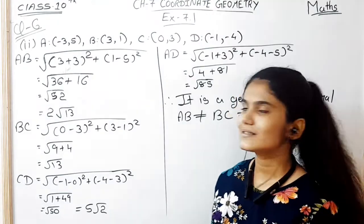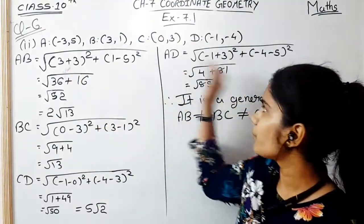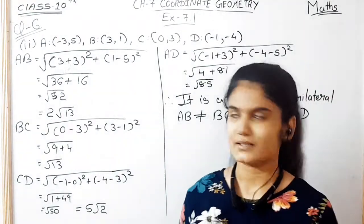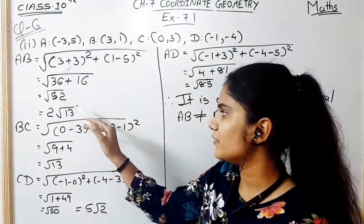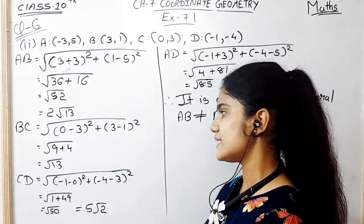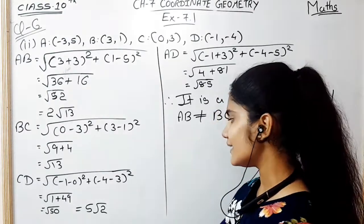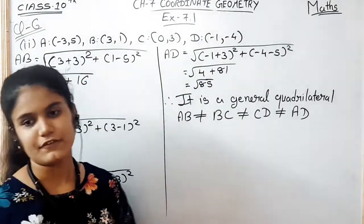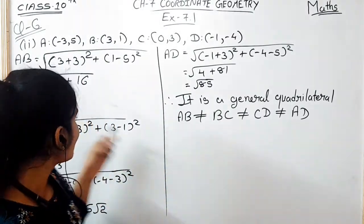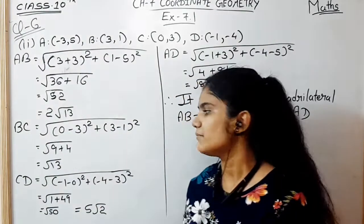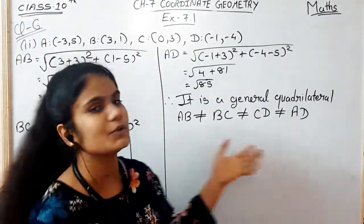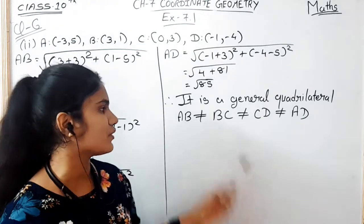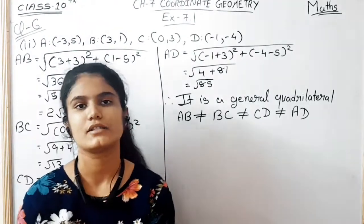For sub-part 2 of question 6, again four points A, B, C, D are given. The distance AB is 2√13, BC is √13, CD is 5√2, and AD is √85. Here the distances AB, BC, CD, and AD are all unequal to each other. So it is a general quadrilateral, since AB ≠ BC ≠ CD ≠ AD.